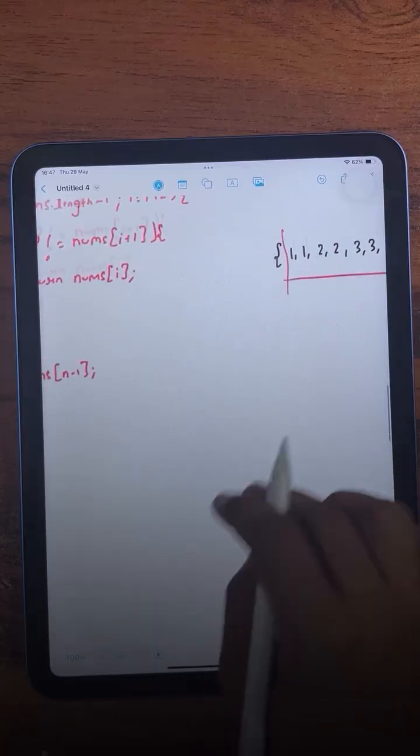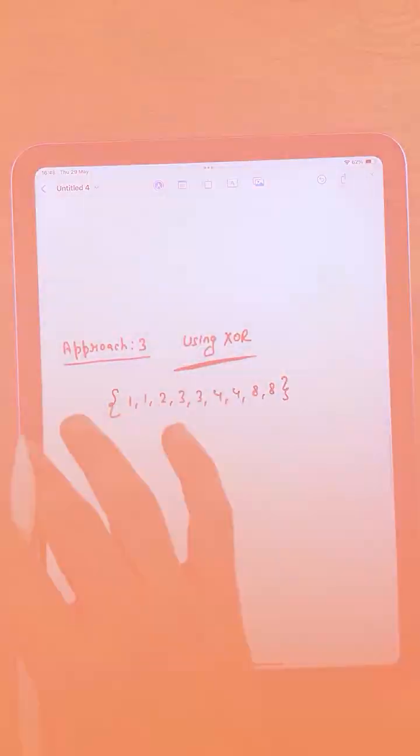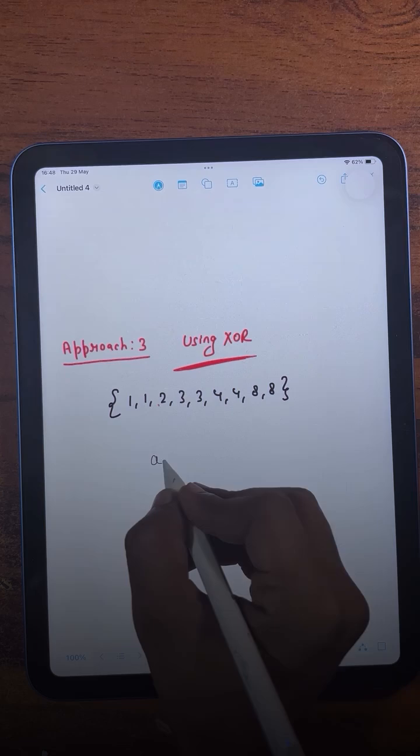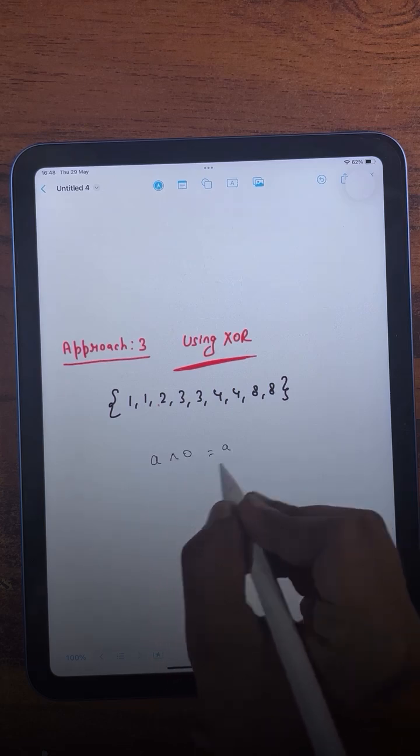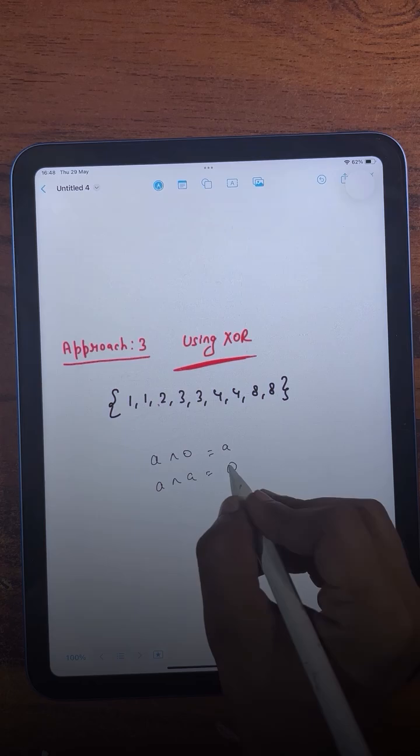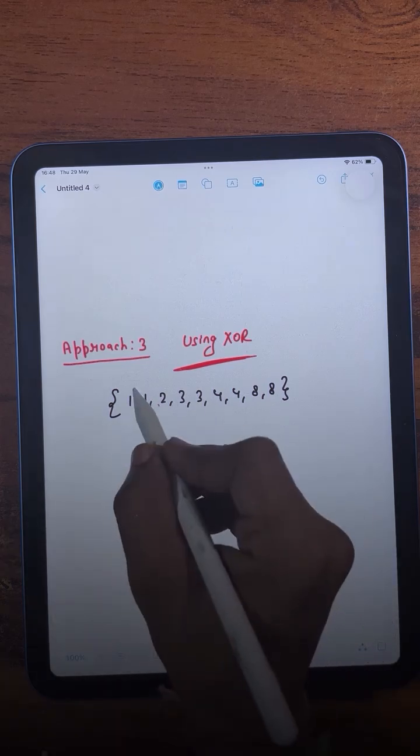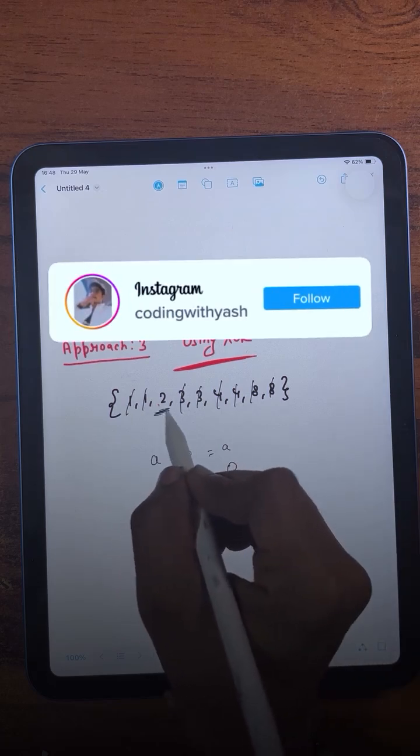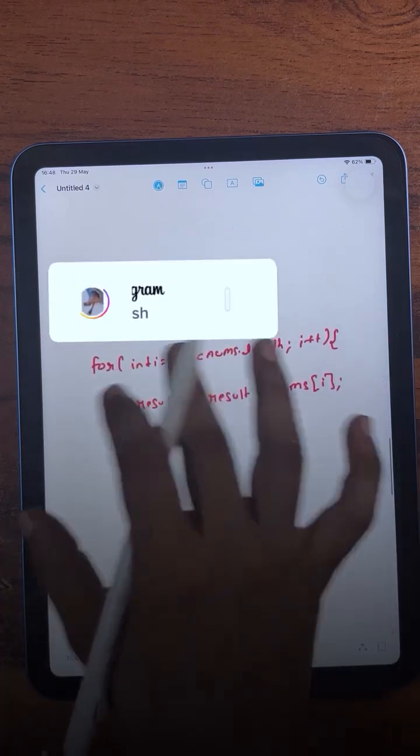Now coming to the third approach. This approach is very simple; we just need to use the properties of XOR. We know if you XOR any element with zero, you will get the number itself, and if you XOR the number with the same number, then you will get zero. So here we do the same thing: the duplicate elements will cancel out each other and give us zero, and at the last we will only be having a single element. That's how we have done the same thing here.